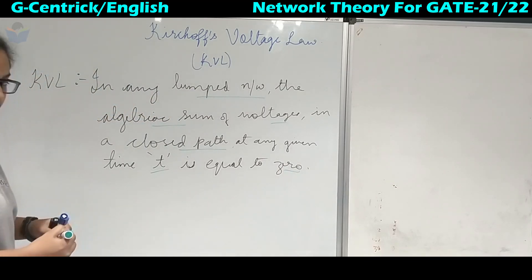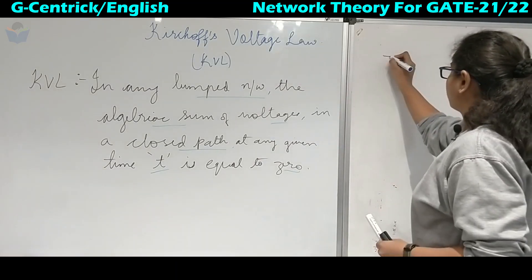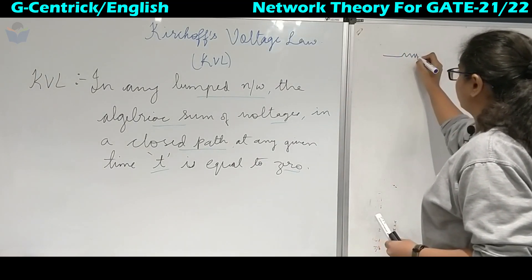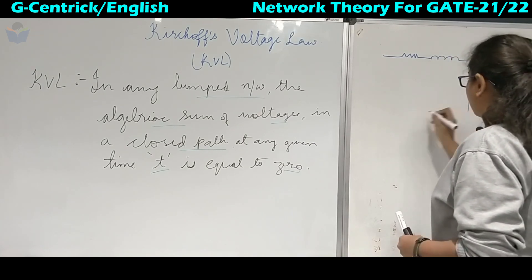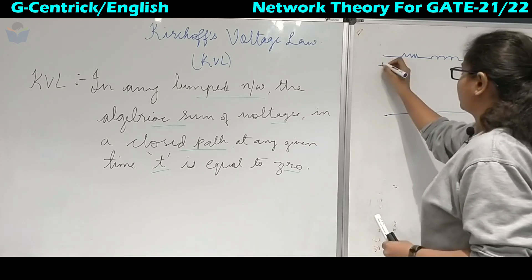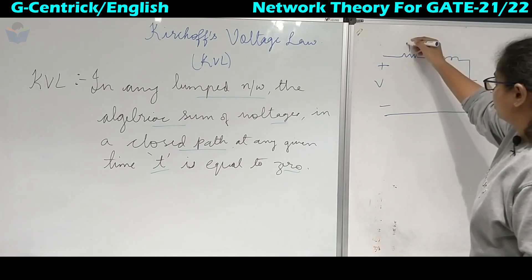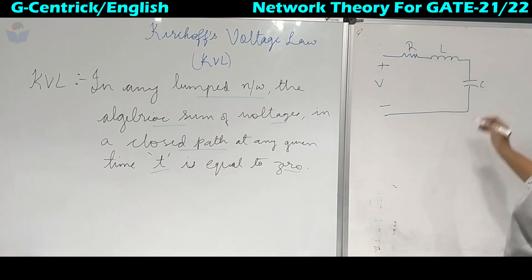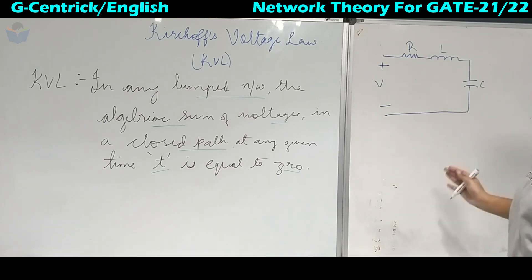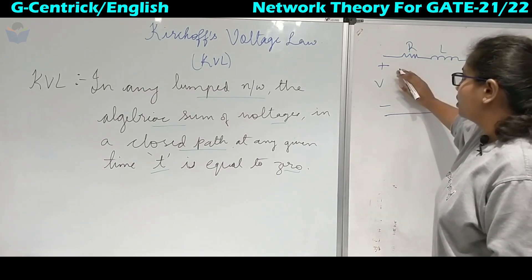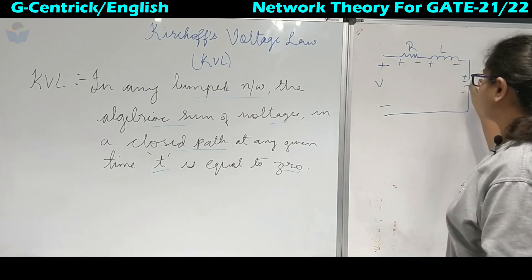To understand this statement, we will take a circuit diagram. First we will take a resistor, inductor, and a capacitor. Here we will take the voltage source plus minus V. Now we have a resistor, inductor, and capacitor — this is a closed path, so current will be flowing in this path. We will mark sign conventions: plus minus, plus minus, plus minus.